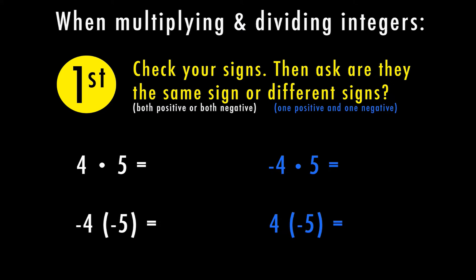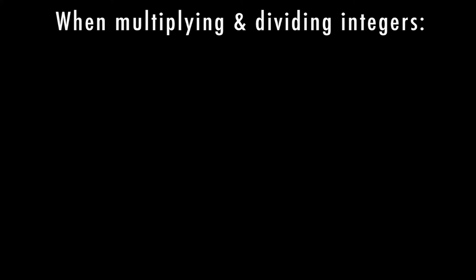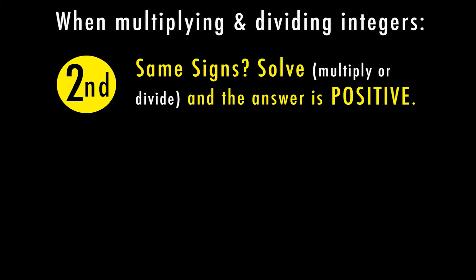So for the second step, let's see what we do when we have the same sign. If we have the same sign, we're going to solve by either multiplying or dividing the numbers, and then our answer is positive every single time.